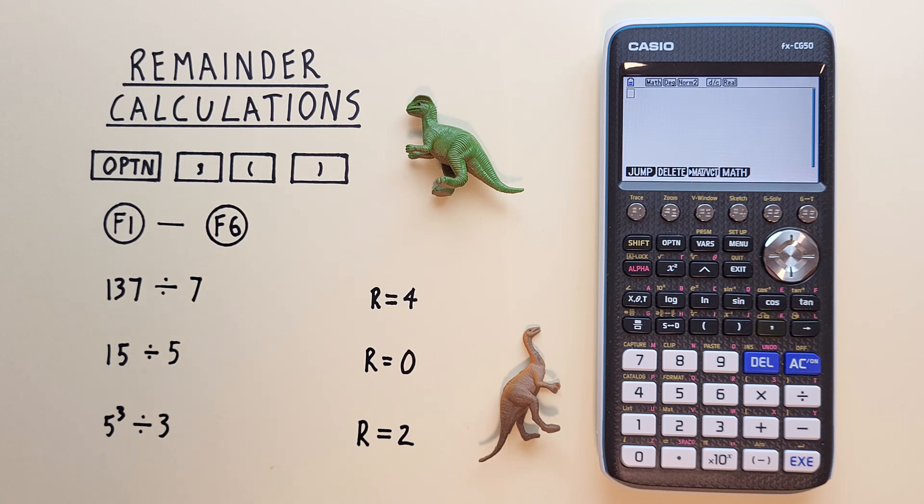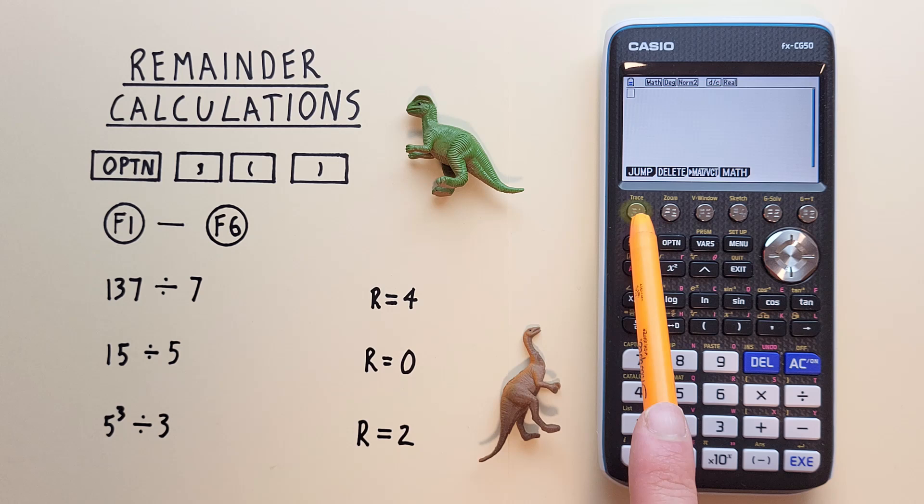The Bracket keys that look like this, located here, and the F1 through F6 keys that look like this, located across the top here.